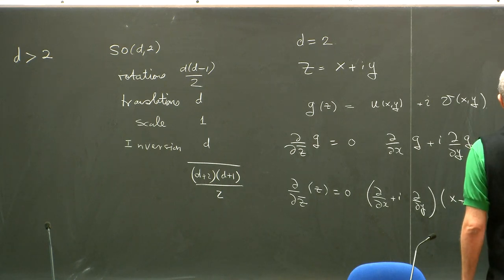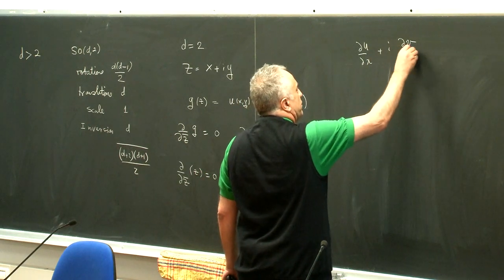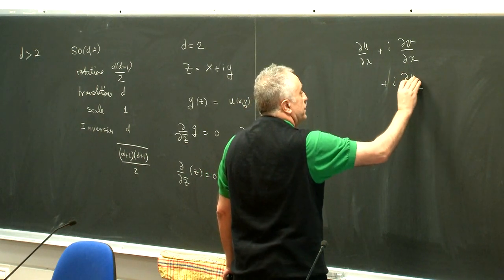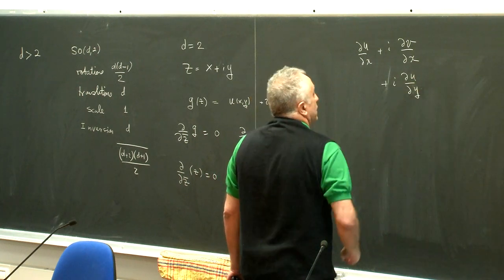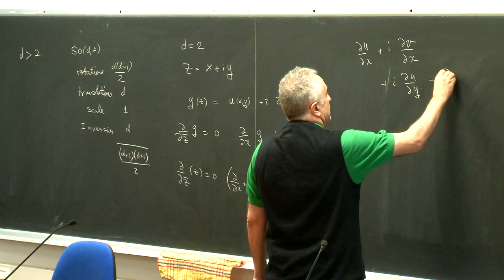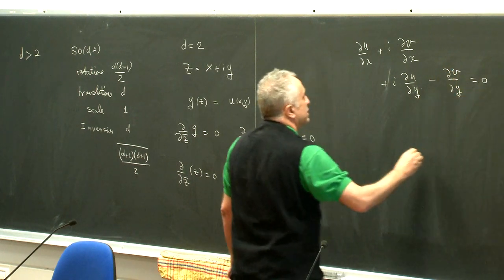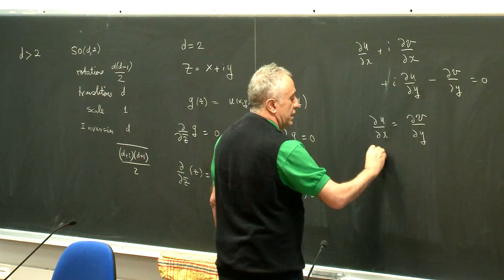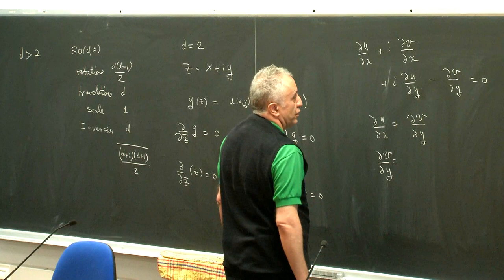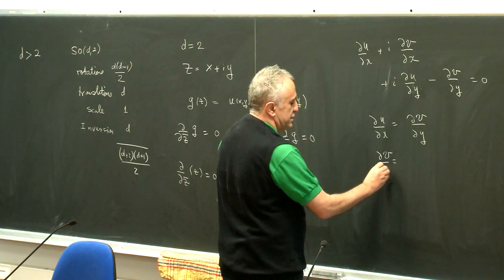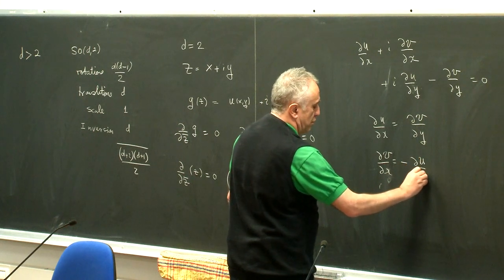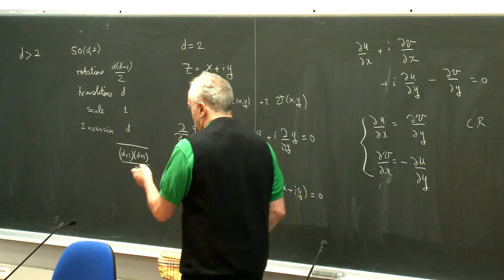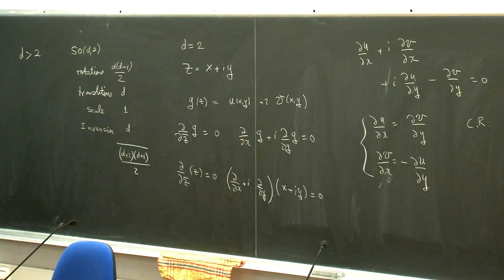Opening up the Cauchy-Riemann conditions: ∂U/∂x + i·∂V/∂x + i·∂U/∂y − ∂V/∂y = 0. Hence ∂U/∂x = ∂V/∂y, and ∂V/∂x = −∂U/∂y. These are called the Cauchy-Riemann conditions, and they should be on the next slide.